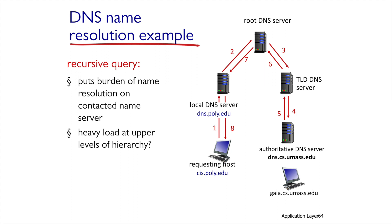There are advantages and disadvantages to each method. In the recursive method, the address is learned along the entire search chain, whereas in the iterative method, the address is learned only on the local server. On the other hand, the recursive method may experience greater loads on already overloaded servers like the root and TLD servers.